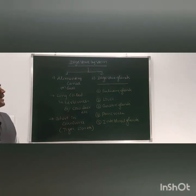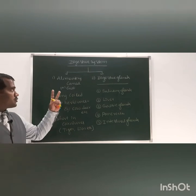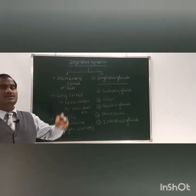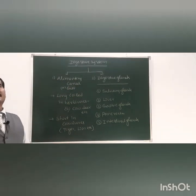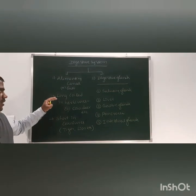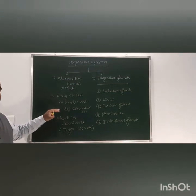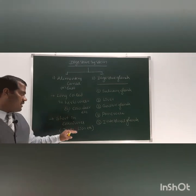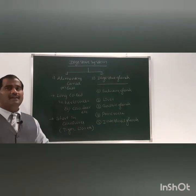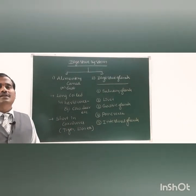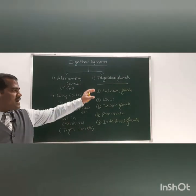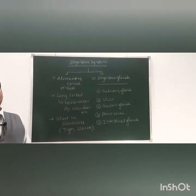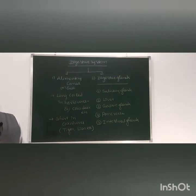So, the digestive system has two parts: the alimentary canal and the digestive glands. The alimentary canal is long and coiled in herbivores — cow, deer, etc. — and short in carnivores — tiger, lion, etc. These are the types of digestive glands.